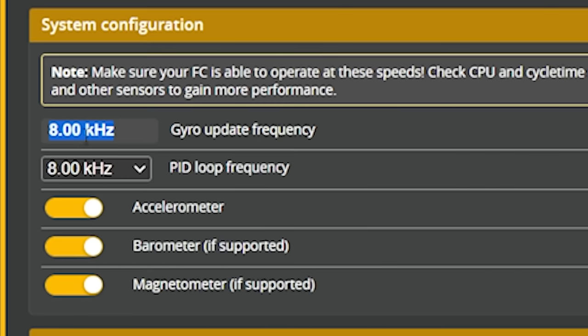The Betaflight devs have decided the best way to get a good flying quadcopter is to not let you change the gyro update frequency. You can see there's no pulldown — it's just locked at eight kilohertz. That's the native gyro sampling rate of the gyro chip on this board, and there's nothing you can do to change that.